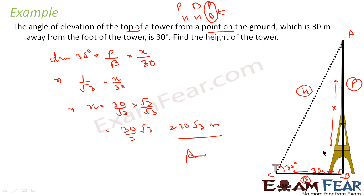So the height of the tower is 10√3 meters — very simple. Just understand the problem, draw a right triangle, and see what you are looking for. You have x (perpendicular) and 30 (base), so since you have P and B, you go for tan 30°. Just put in the formula and get the answer.